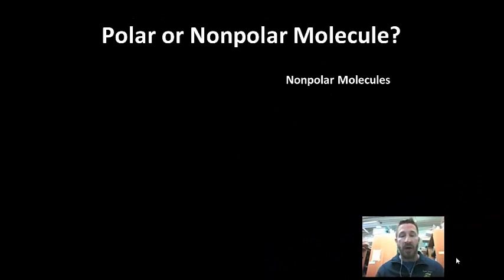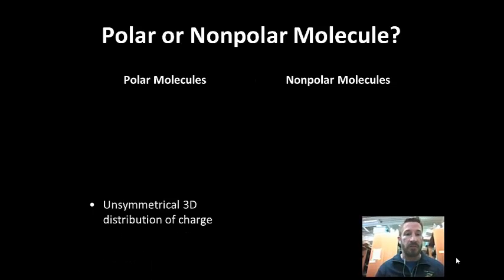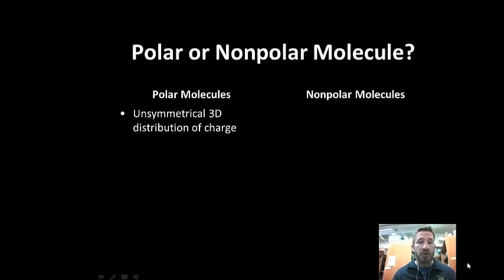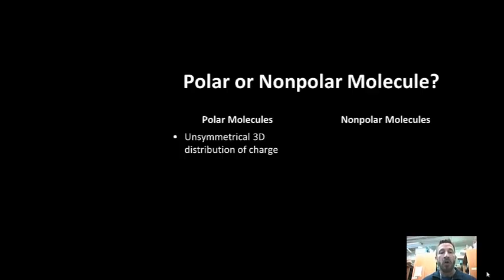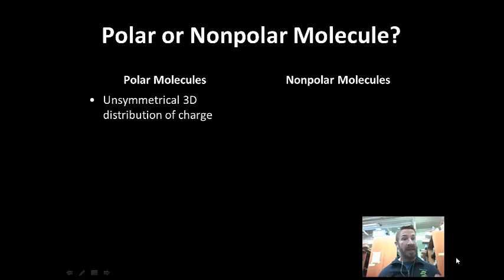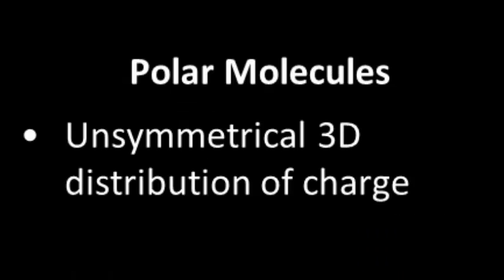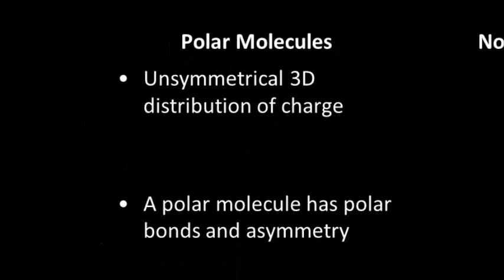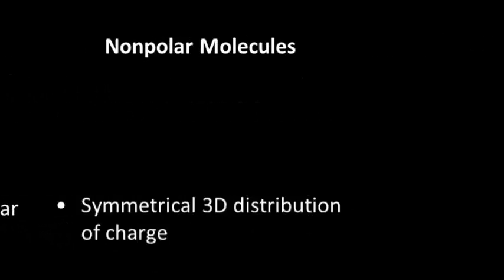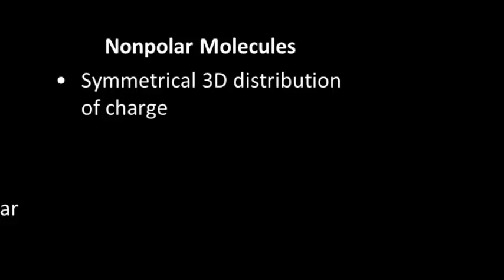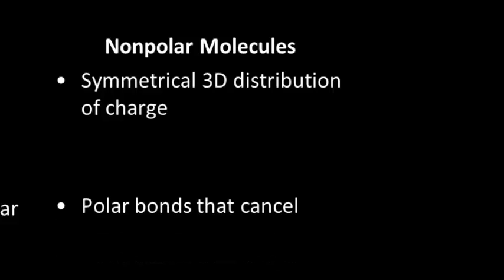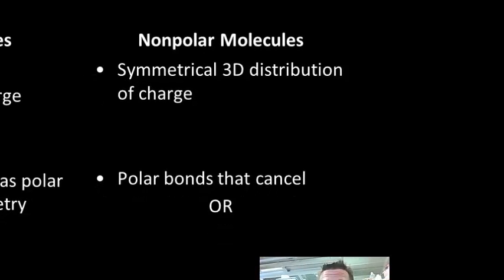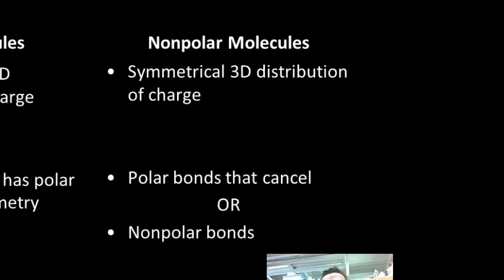Polar or non-polar molecules: polar molecules will have what we call an unsymmetrical three-dimensional distribution of charge, so you have to draw the molecule and look at the entire structure to determine if those charges balance out. Polar molecules also have polar bonds. Non-polar molecules have a symmetrical distribution of charge — there's not one end that's negative or one end that's positive. Non-polar molecules can have polar bonds that cancel, or completely non-polar bonds altogether.